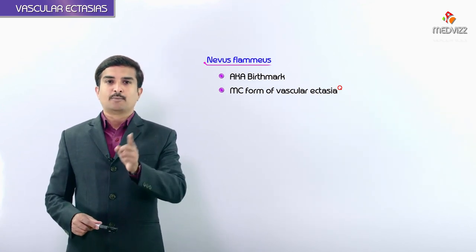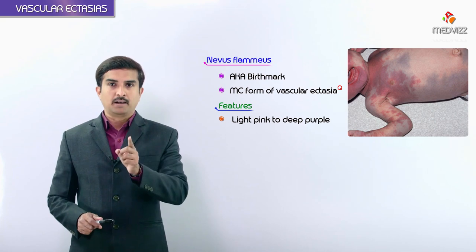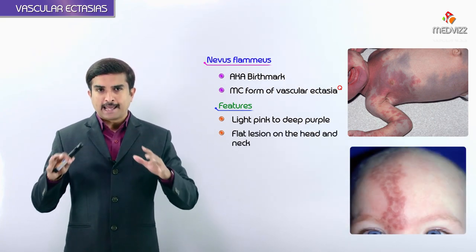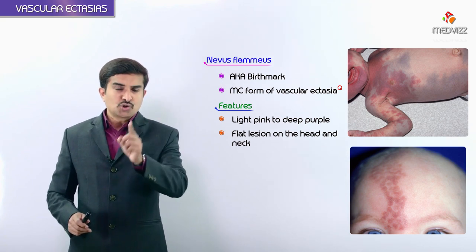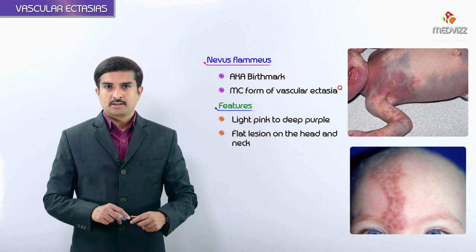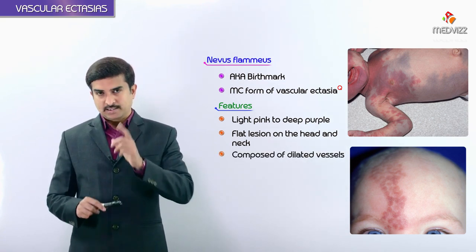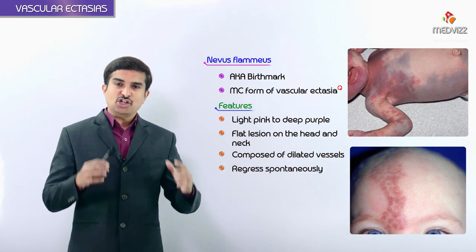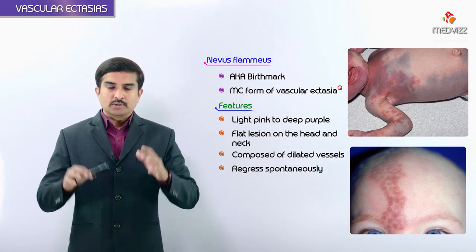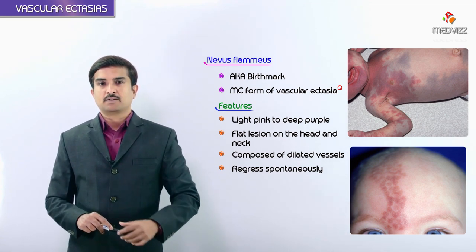When we describe the color of nevus flammeus, it varies from light pink to deep purple. These lesions are often flat, and the usual anatomical areas are the head and neck regions. They are composed mainly of dilated vessels, and these lesions regress spontaneously.